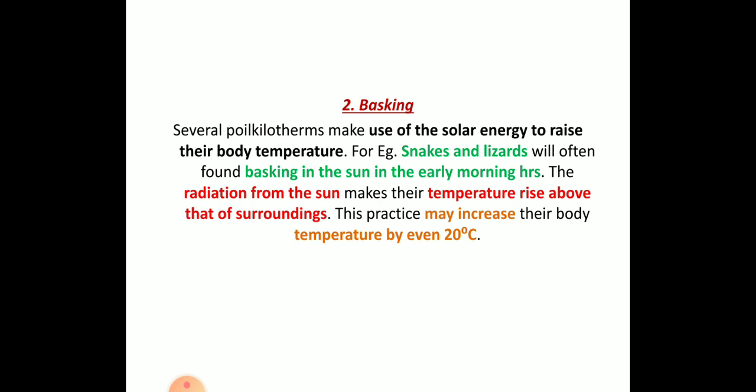The radiation from the sun causes their body temperature to rise by more than 20 degrees Celsius. This cannot happen in humans because basking as a thermoregulatory mechanism applies only to cold-blooded animals.